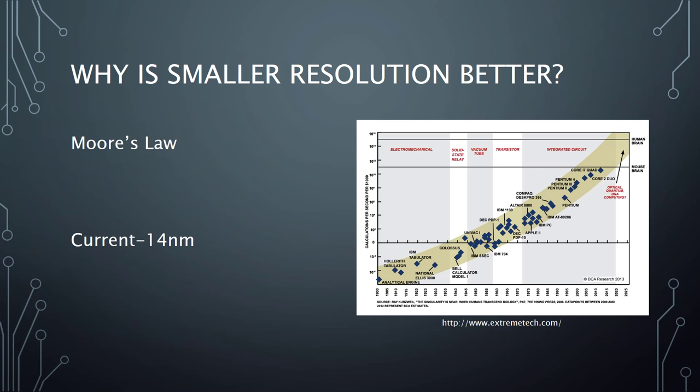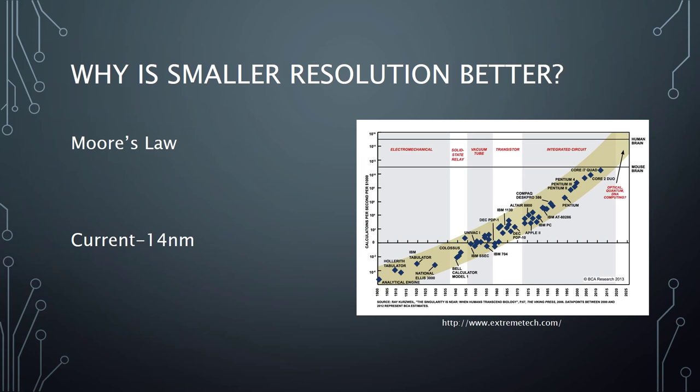Moore's law states that the number of transistors in a space is doubled every two years. Smaller resolution allows for higher density of transistors within an integrated circuit. This allows for higher capabilities of computer processing with smaller components. The new standard of critical dimension, the maximum distance between gates on the component of the transistors, is 14 nanometers. Some companies that sell modern industrial photolithography equipment are ASML and Secudo.